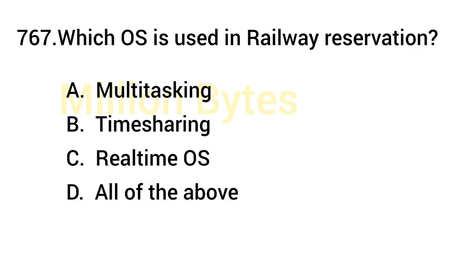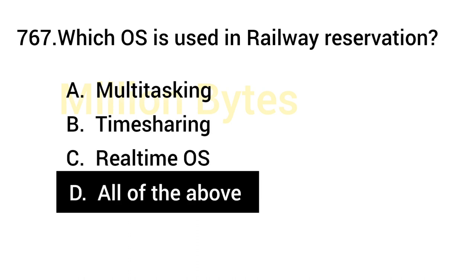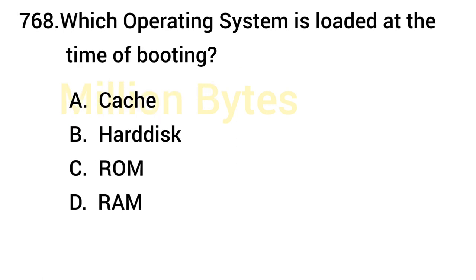Which OS is used in Railway Reservation? Answer is all of the above — Multitasking, Timesharing, and Real Time OS.